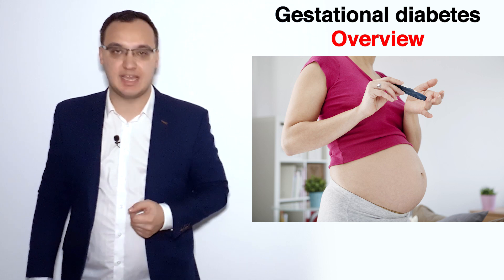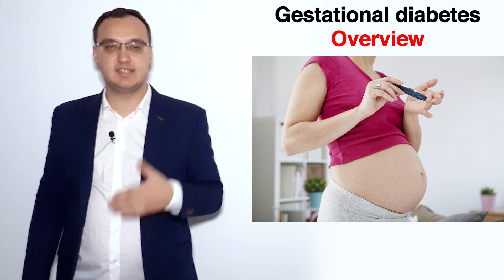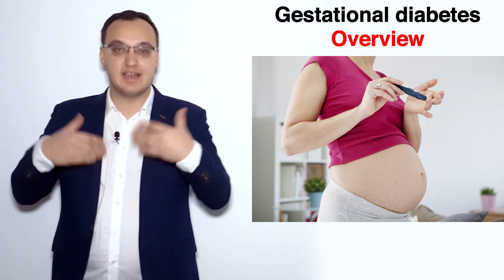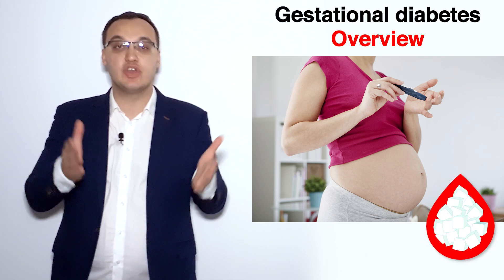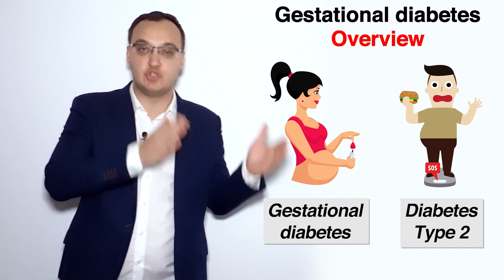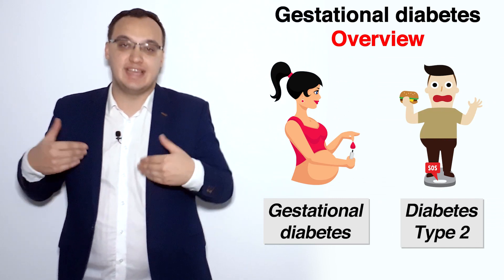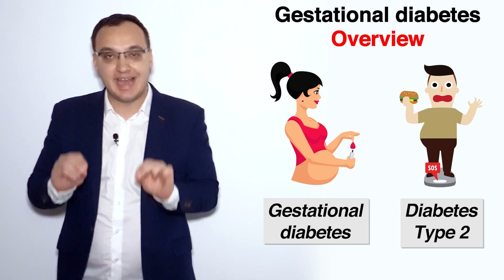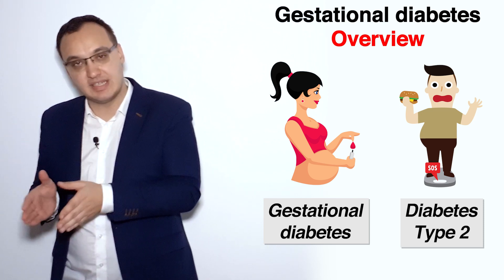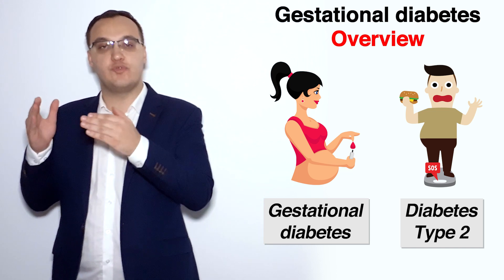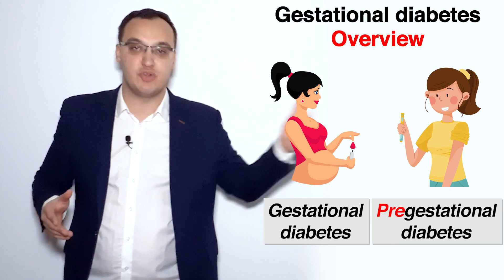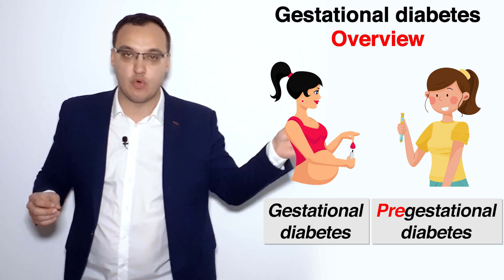Today we look at gestational diabetes. Pregnant women can get an increased sugar level, and we call it diabetes mellitus, but not diabetes mellitus type 2. We call it gestational diabetes because we diagnosed it during the pregnancy and not before. If we diagnose a patient before pregnancy, it's called pre-gestational — 'pre' meaning before.